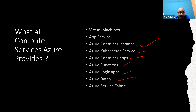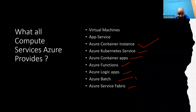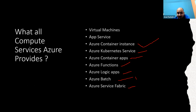Last but not the least, we have Service Fabric — a distributed systems platform that makes it easy to package, deploy, and manage scalable and reliable microservices and containers. Kubernetes is not the only thing — Service Fabric is something from Microsoft. I haven't seen too much of Service Fabric in practice, but AKS is everywhere. Service Fabric is something Microsoft uses for Azure itself in the backend.